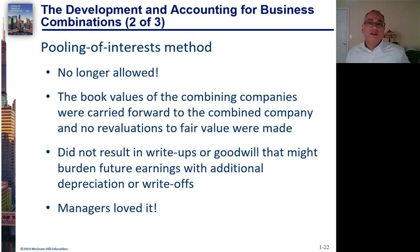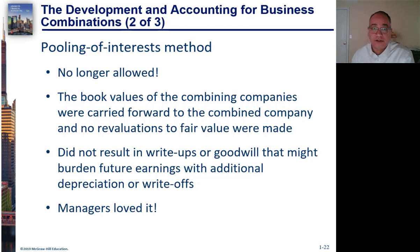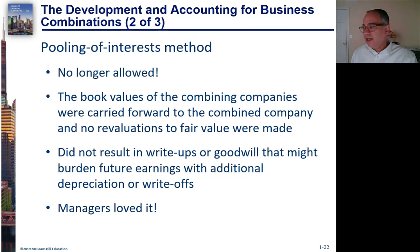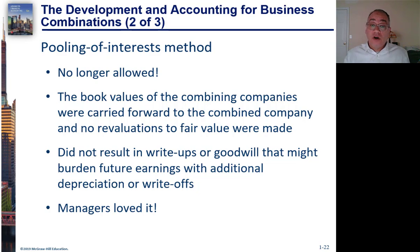What was so great about pooling? The way pooling worked was that you would take the books of the two companies — the parent and the sub — and you would combine them as if they had been operating as one company all along. You would actually combine previous years, and you would not write up any assets. If there was any value given from one company to the other, it was sort of smoothed over. Instead, you simply took the two companies and presented them as if they had always been one company, combining previous years' financial statements with no write-ups and no goodwill.